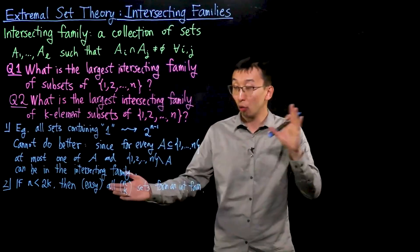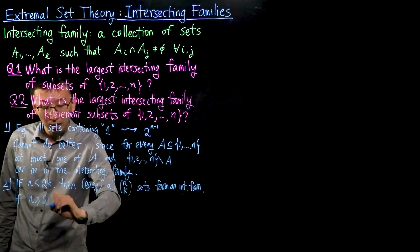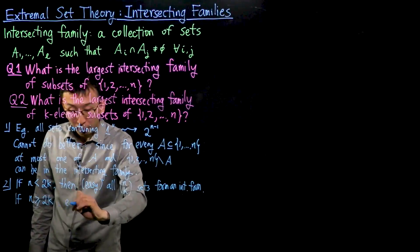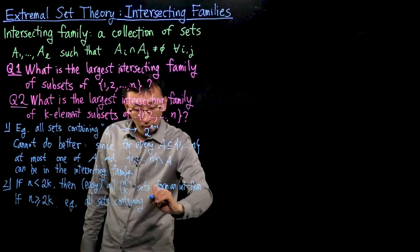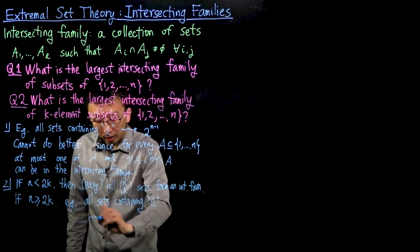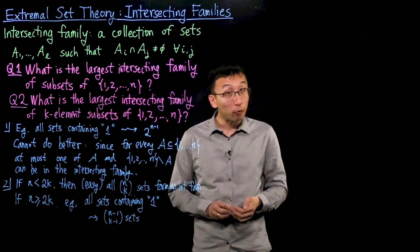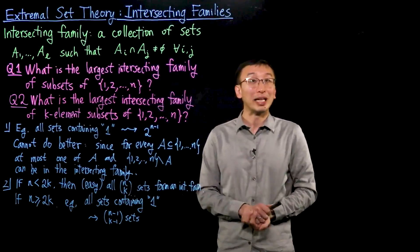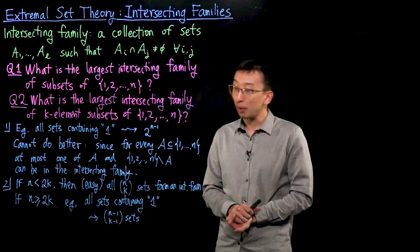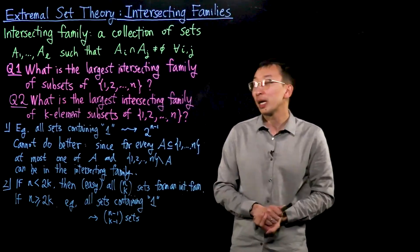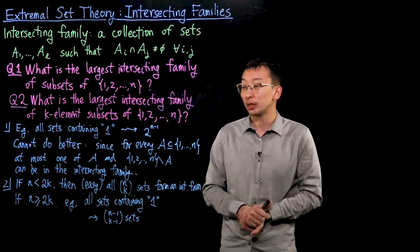There is nothing more to do in that easy case, since we can take all K-element sets. The more interesting part is what happens when N is at least 2K. As an example, we can again take all K-element sets containing the element 1. This gives us N−1 choose K−1 sets, and they form an intersecting family because any pair intersects in a set containing element 1. But is this the best possible, or are there even larger intersecting families of K-element subsets?